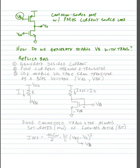And in order to do this, we're going to first generate a desired current. We're going to push that current through a transistor. And we're going to use a stable voltage from the transistor as a bias voltage.